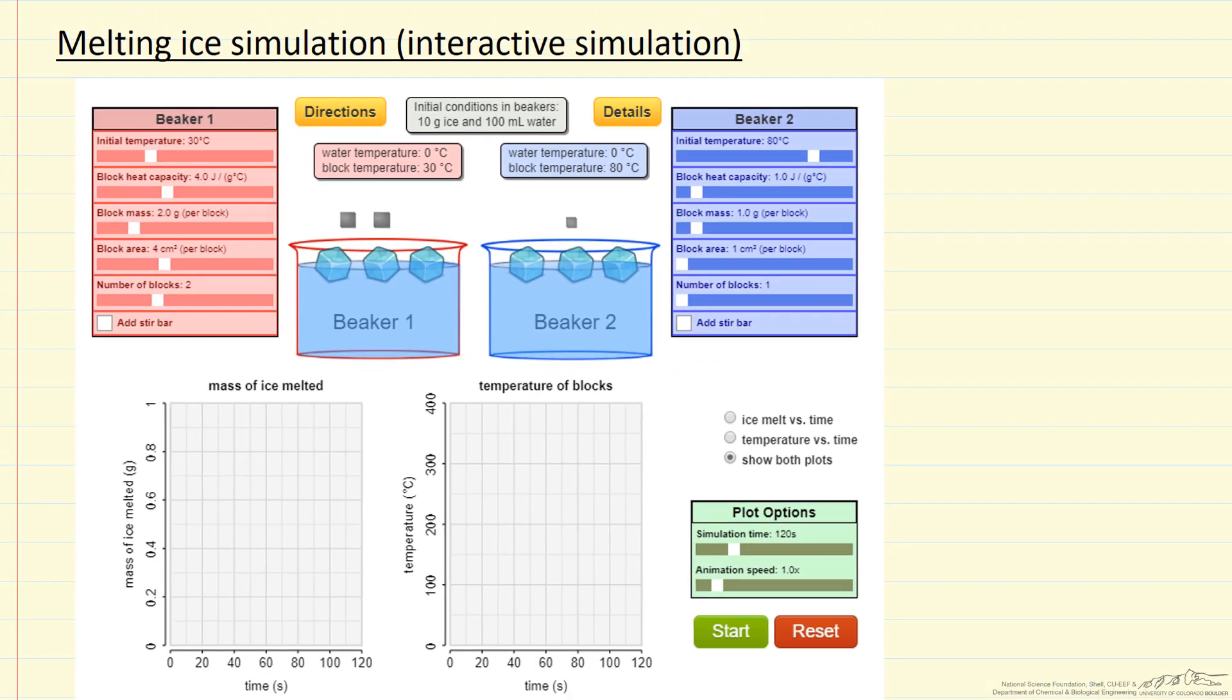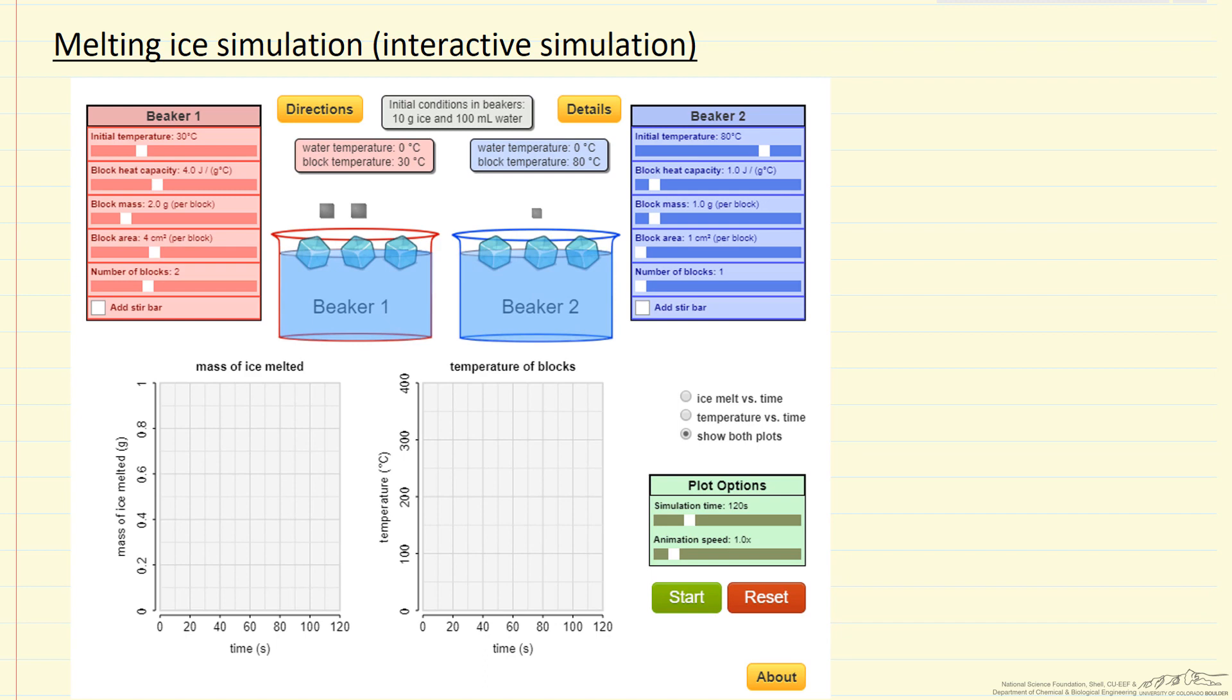And then on the right side, we can pick different values for the same parameters. And then what we're going to plot is how much ice melts as a function of time, and the temperature of the blocks as a function of time.